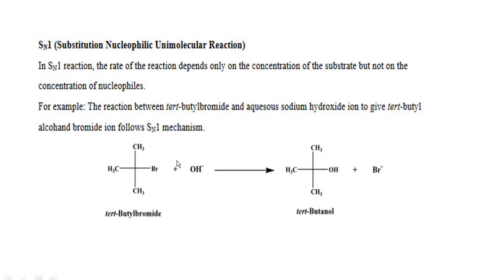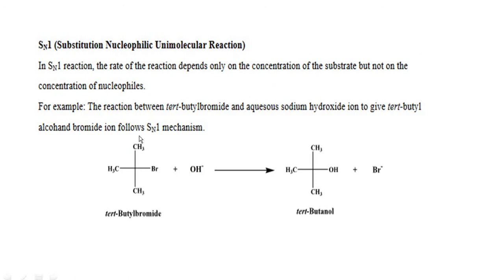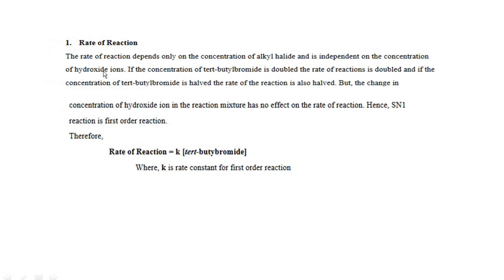It is known as substitution nucleophilic unimolecular reaction. For example, the reaction between tertiary butyl bromide and aqueous hydroxide ion gives tertiary butyl alcohol and a bromide ion is released. This is the SN1 mechanism. The rate of reaction depends only on one molecule, which is tertiary butyl bromide, and is independent of the concentration of the nucleophile. So the rate of reaction depends on the concentration of alkyl halide. If we increase the concentration of tertiary butyl bromide, then the rate of reaction also increases.